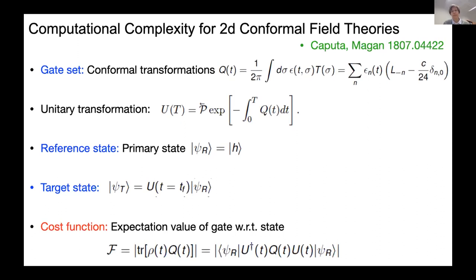There is a very nice paper by Caputa and Magan, which did a lot of the foundational work for our analysis. They found the following answers for defining complexity in two-dimensional CFT. First, they define a gate set using conformal transformations themselves as gates. A word of warning: this is not a completely general approach covering the entire Hilbert space — these transformations move you inside one Verma module or irreducible representation of the conformal symmetry group. Since the task is so difficult, it's very nice to have a well-defined starting point.